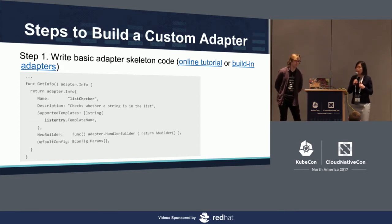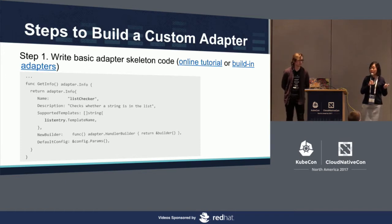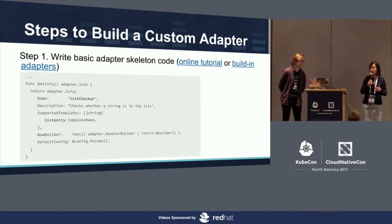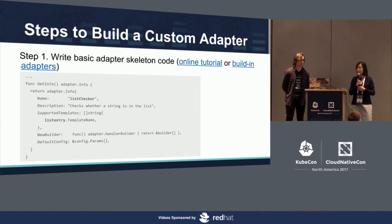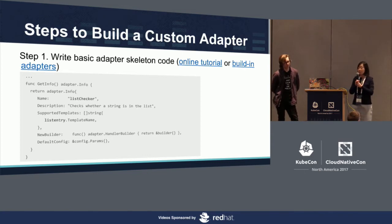The first step is to write the basic adapter skeleton code — you can copy it from our online tutorial or any built-in adapters. I highlighted the part where you need to provide adapter information including the name, description, and the templates the adapter supports. You can also provide a default configuration for the adapter. In the second step, you write the adapter configuration, which in this case is a list of strings.